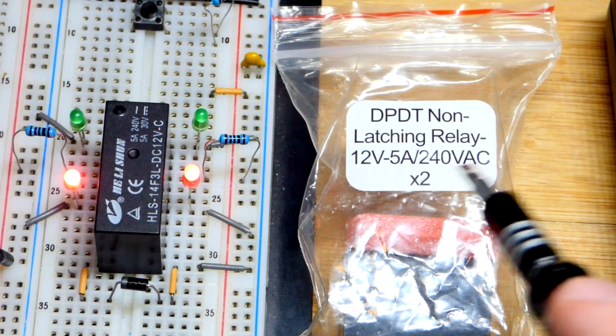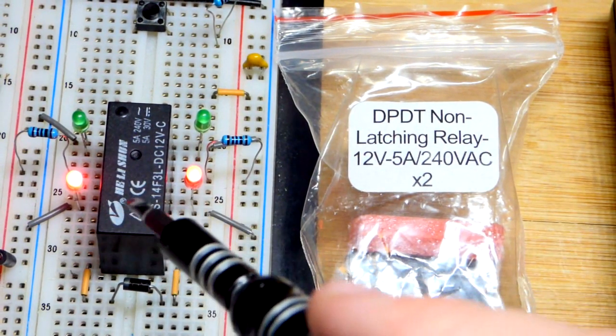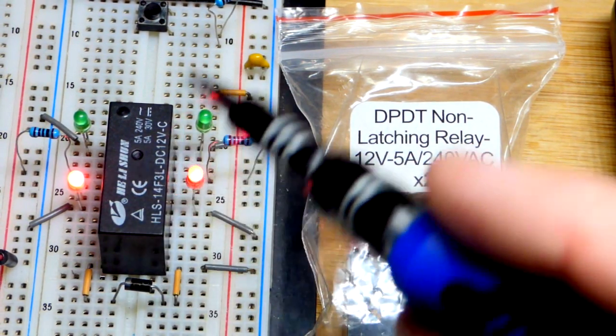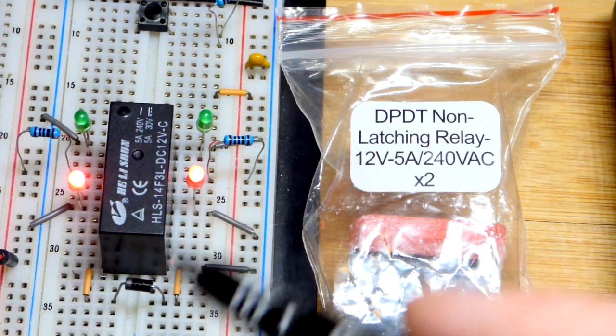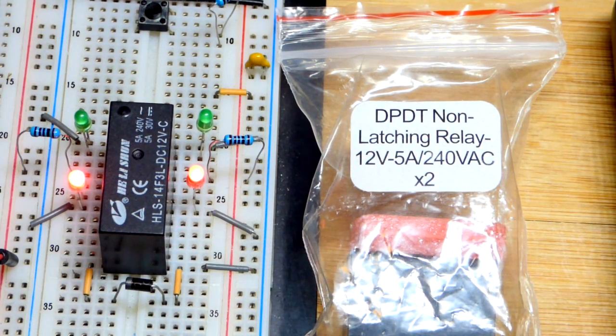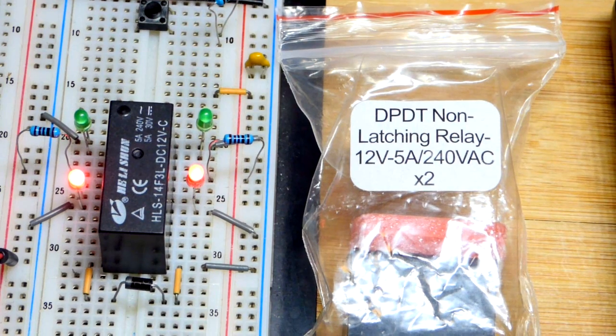Latching relays have a couple coils - you use one to flip it in one state and then one to flip it in the other state. Once you flip it, you can just let go and it'll stay in whichever state it was before.